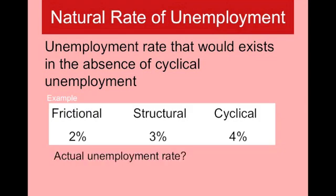In this economy, what is the actual unemployment rate? To find the actual unemployment rate of a country, you add up all the categories of unemployment. To find the natural rate of unemployment, you add up only the categories economists say are naturally occurring. The actual unemployment rate is 9% and the natural rate of unemployment is 5%. When any politician or news publication says the economy has reached full employment, that does not mean there's a 0% unemployment rate — it means the economy has achieved the natural rate of unemployment.